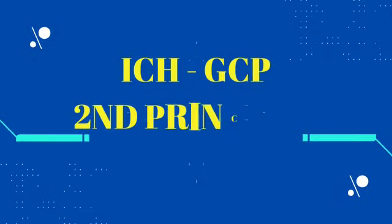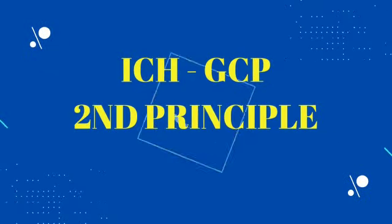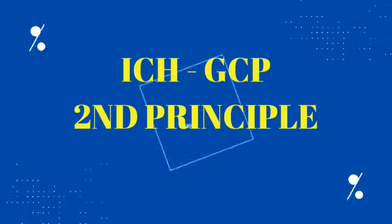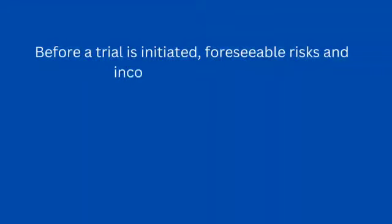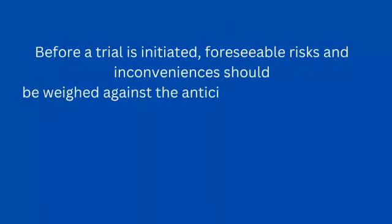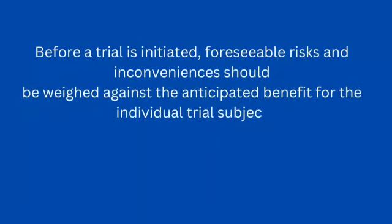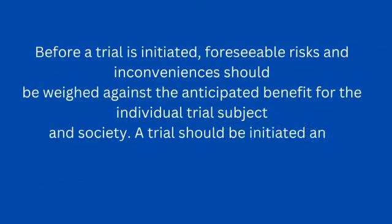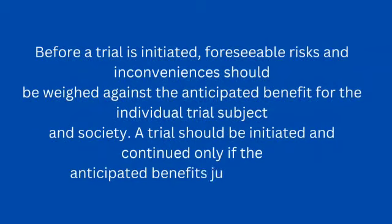Hello Bachcho, today we will look at the second principle of ICH GCP. The second principle is: before a trial is initiated, foreseeable risk and inconvenience should be weighed against the anticipated benefit for the individual trial subject and society. A trial should be initiated and continued only if the anticipated benefits justify the risk.